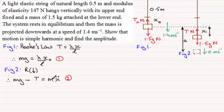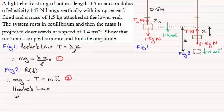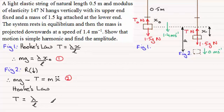Again using Hooke's law in this diagram, the tension T equals the modulus of elasticity λ divided by the natural length times the extension. The extension here is x plus x₀, so T = λ(x + x₀) / L. I'll call this equation three.